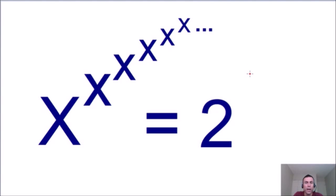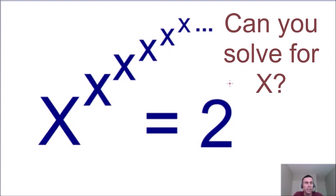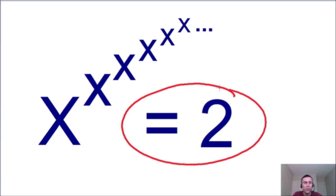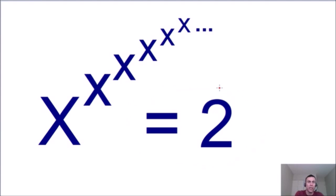So the question for this riddle is: is it possible to plug in a value for x such that the infinite exponent tower equals the finite number 2? Can you solve this equation for x? Take your time and work on this problem, and I will show you the solution in three seconds.